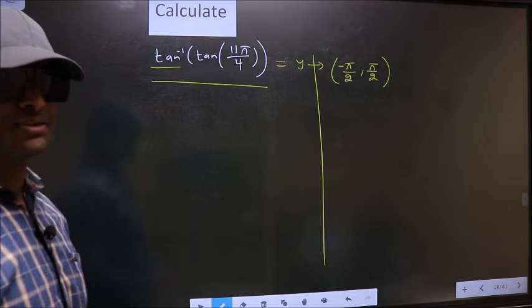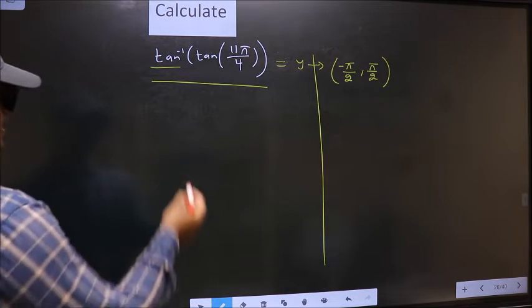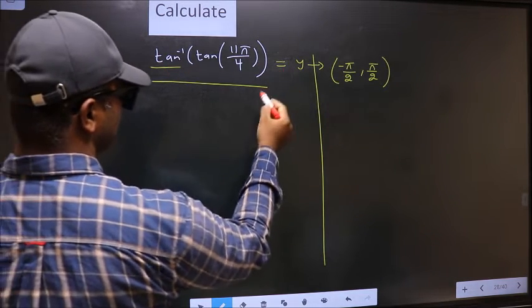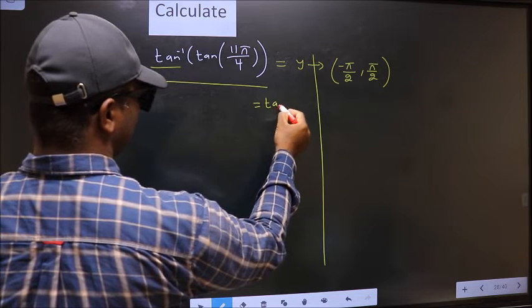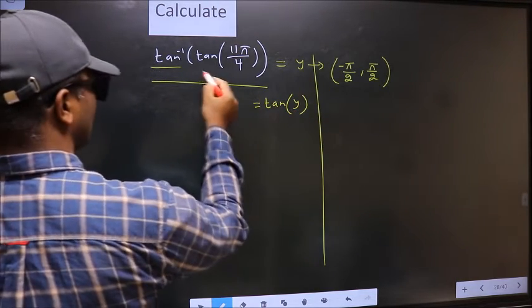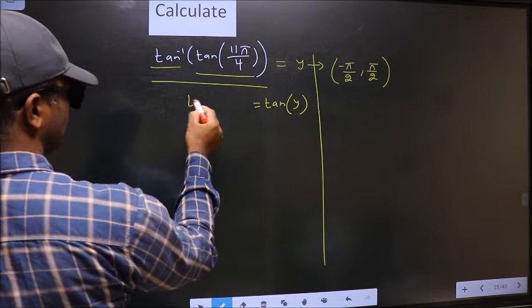Clear with this point. Next, shift tan inverse to the other side. It will become tan Y, and this no change.